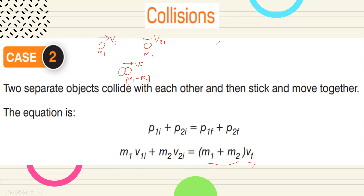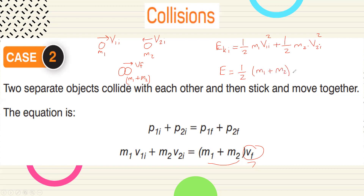For Case 2, to check collision type: EK initial equals ½m1·v1i² plus ½m2·v2i². EK final equals ½(m1 + m2)·v_final². Because they move together, we don't say v1 final and v2 final separately — there's only one mass and one velocity. Then compare EK initial and EK final to determine elastic or inelastic.